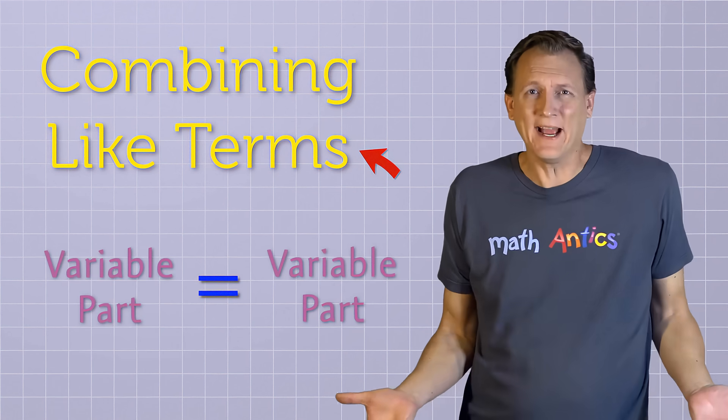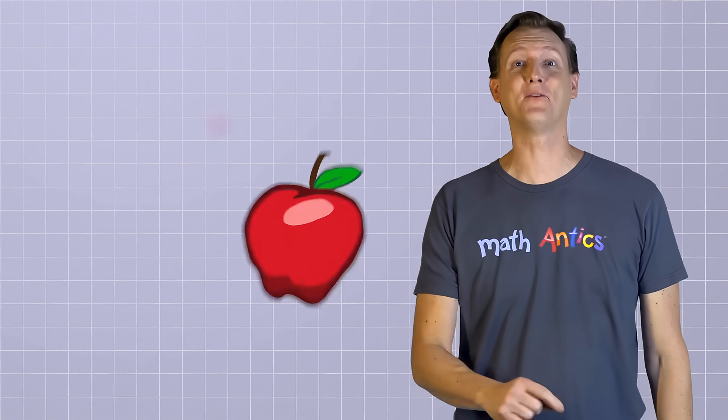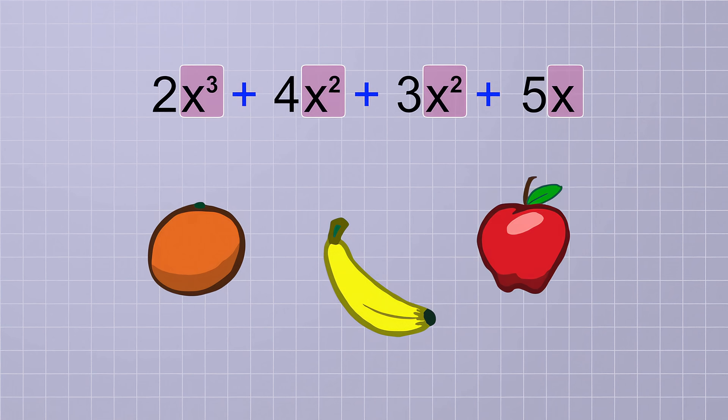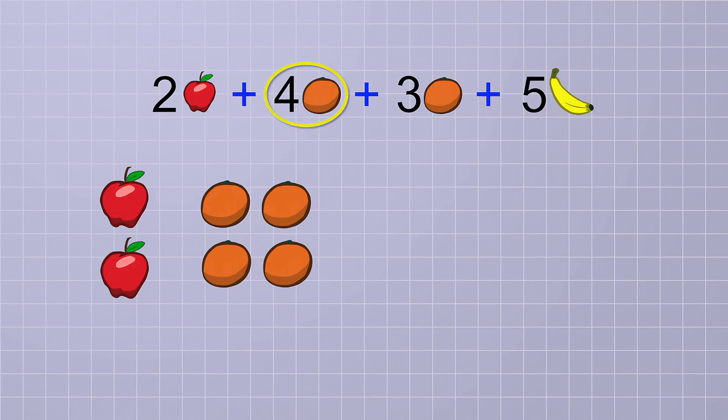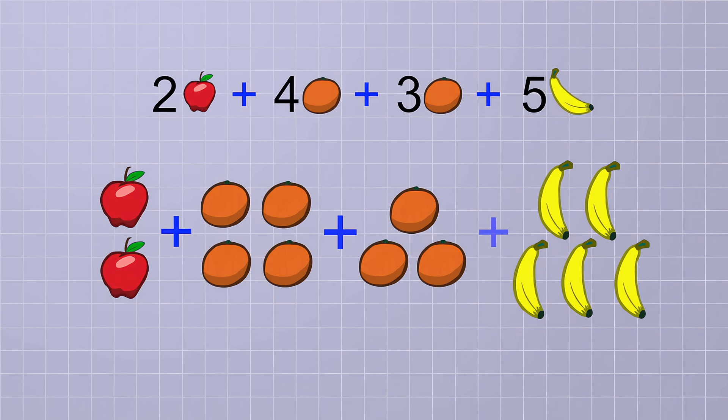But why can we combine them? Well, to understand that, I like to pretend that the variable parts of a polynomial's terms are fruit. Yes, you heard me. Fruit. For example, have a look at this polynomial. But let's substitute a different kind of fruit for each different variable part. Let's change x cubed to apples, x squared to oranges, and just plain x to bananas. If we do that, what would this new fruit polynomial be telling us? Well, this first term represents 2 apples. The next term is 4 oranges. The next term is 3 oranges. And the last term is 5 bananas. And these are all being added together.